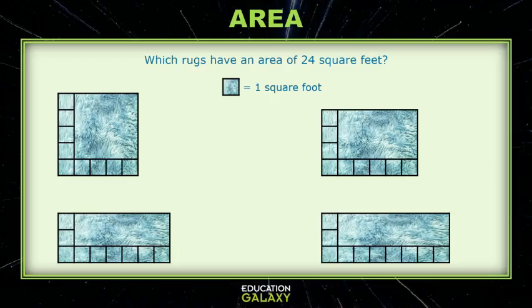Here we want to know which rugs have an area of 24 square feet. Let's check these together. This first one we see has one, two, three, four, five feet across the bottom and one, two, three, four, five feet across the side. And we've just learned that we can either add five five times or we can use multiplication. So five feet times five feet is 25 square feet, but we're looking for ones that are 24 square feet, so moving on.